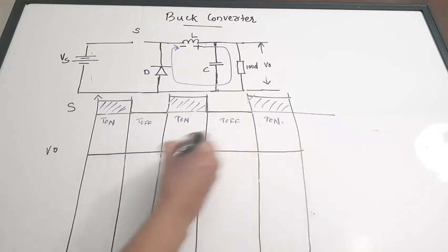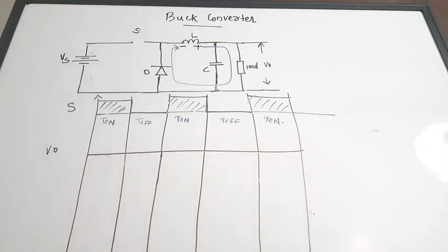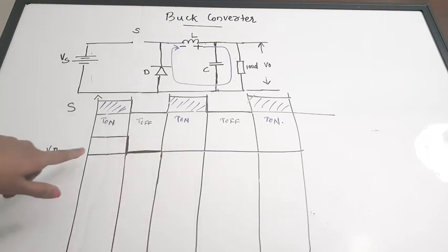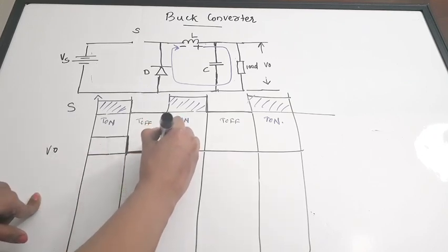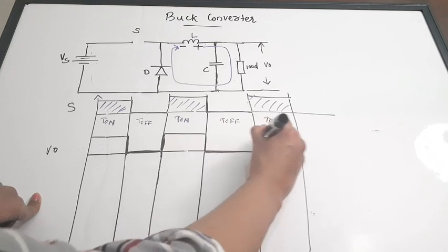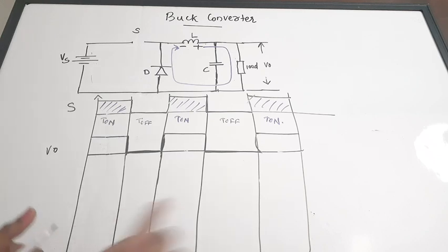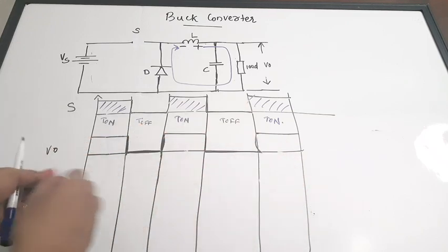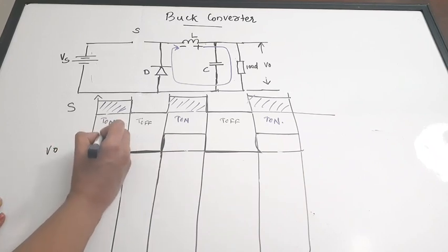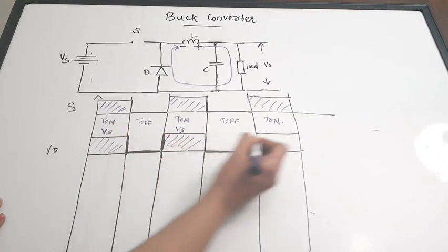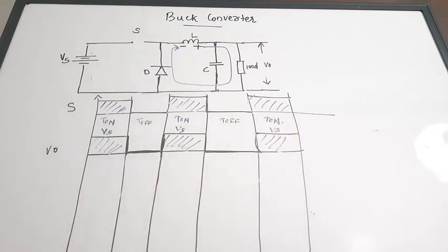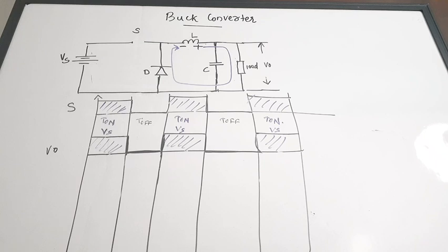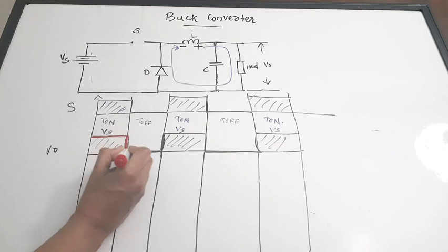For the V_out waveform: when the switch is on, V_out equals V_s (the supply or DC voltage), so it rises to V_DC. When the switch is off, V_out equals zero volts. This pattern repeats — during T_on intervals V_out equals V_s, and during T_off intervals V_out equals zero. That is the output voltage waveform for the buck converter.